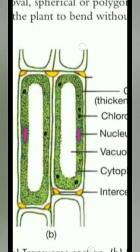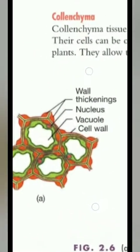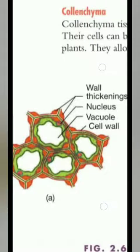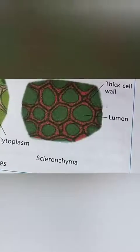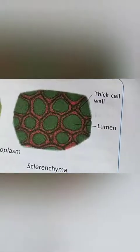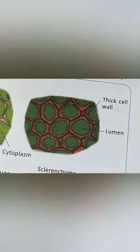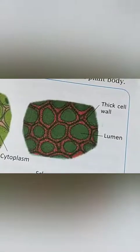Now, sclerenchyma. This tissue is composed of long, narrow, and thick-walled dead cells. The walls are thickened due to the presence of lignin. These cells may be fiber-like and their cell wall is very thick. They are present around the vascular bundles in stems, the veins of leaves, and the petioles.